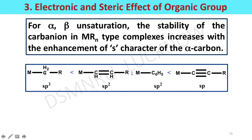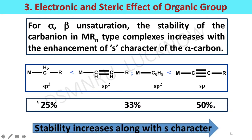For example, comparing metal alkyl, metal alkene, metal aryl, and metal alkyne complexes: moving from left to right, the hybridization of carbon goes from sp3, to sp2, to sp. The s-character in the carbon atom increases from 25 percent to 30 percent, then to 50 percent. So the stability of the complexes also increases along with the s-character.